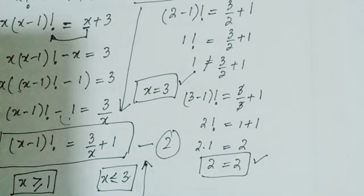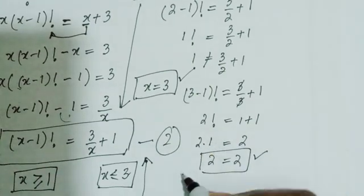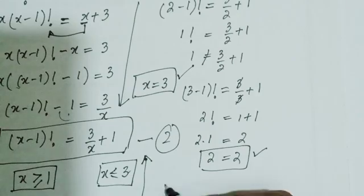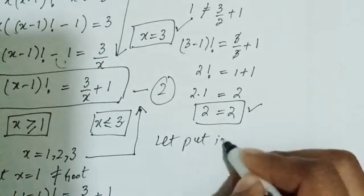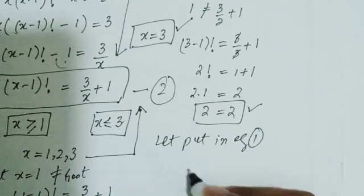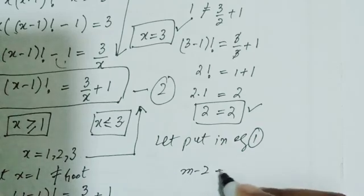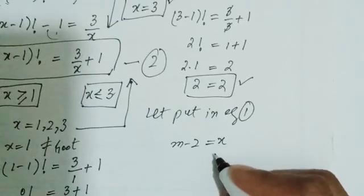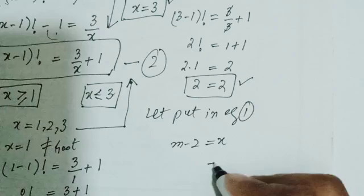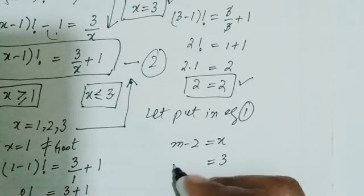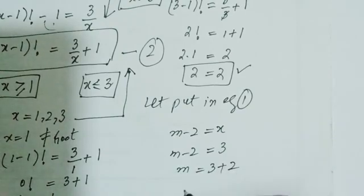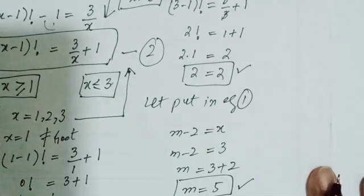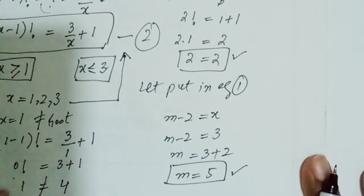Let's put this value back into equation number 1. Equation number 1 is m minus 2 equals x. We found x equals 3, so m minus 2 equals 3, giving m equals 3 plus 2, therefore m equals 5.